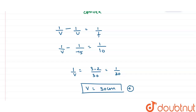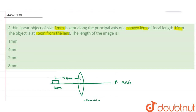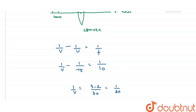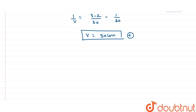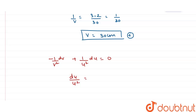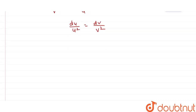Now we have to find the length of the image. If we differentiate the lens formula, we get: minus 1/v² dv plus 1/u² du equals 0. This simplifies to du/u² equals dv/v². Therefore, dv equals (v²/u²) times du.